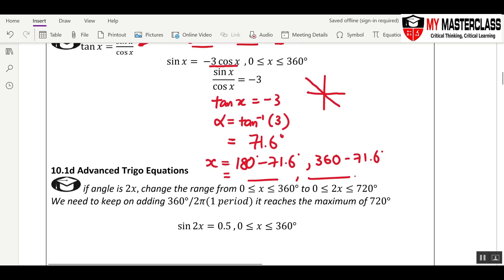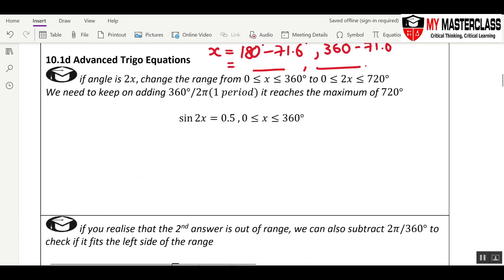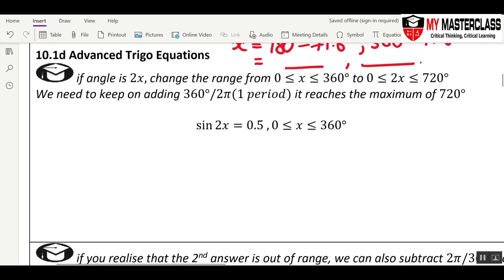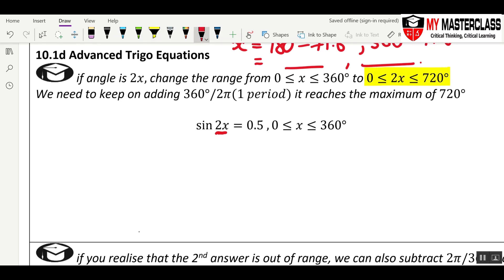The next cue is what happens if you see an equation when there is 2x here. The first thing you need to do is to change the range to suit your angle. So you see that I say let's change this to 2x and hence it is 720 degrees. We need to keep on adding 360 because one period of a sine graph is 360.